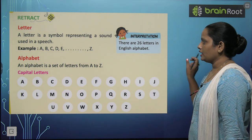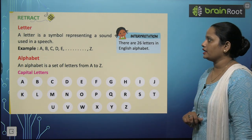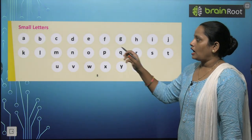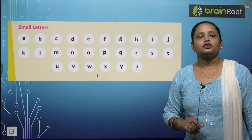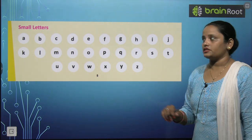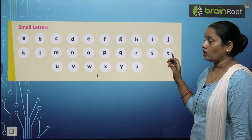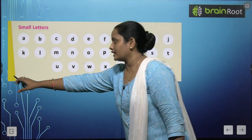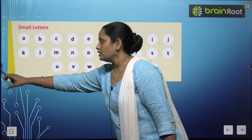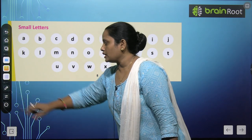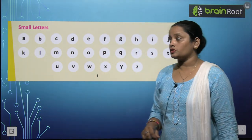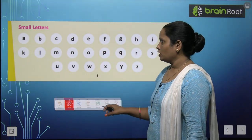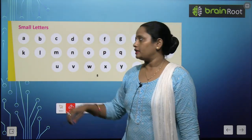Ab hum kya padhenge? Ab hum padhenge about small letters. Toh abhi humne padha tha na — A ko kaise likhte hain capital mein? Ab usi A ko hum small mein kaise likhte hain? Woh hum yahan par dekhenge.